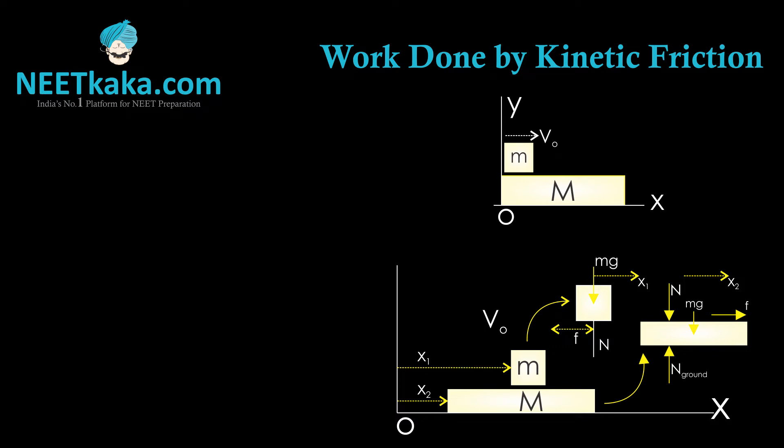The work done by friction on the upper block is F dot x₁, and the work done by friction on the lower block is F dot x₂. Now F dot x₁ equals F into x₁ cos 180, so it is minus F x₁, because the work done by friction opposes the displacement x₁.